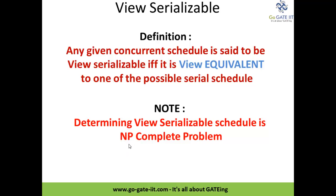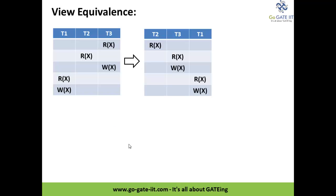In general, for a given set of transactions, it will be difficult to determine whether a schedule is view serializable or not, and that's why it falls under NP-complete problem. To explain view equivalence, we will consider a problem here.